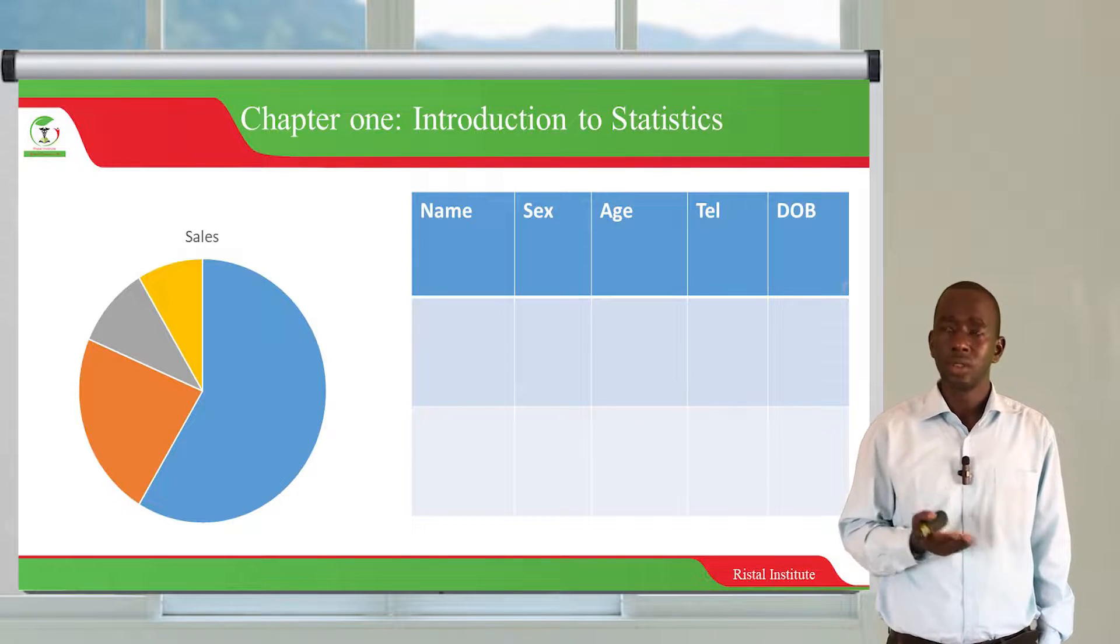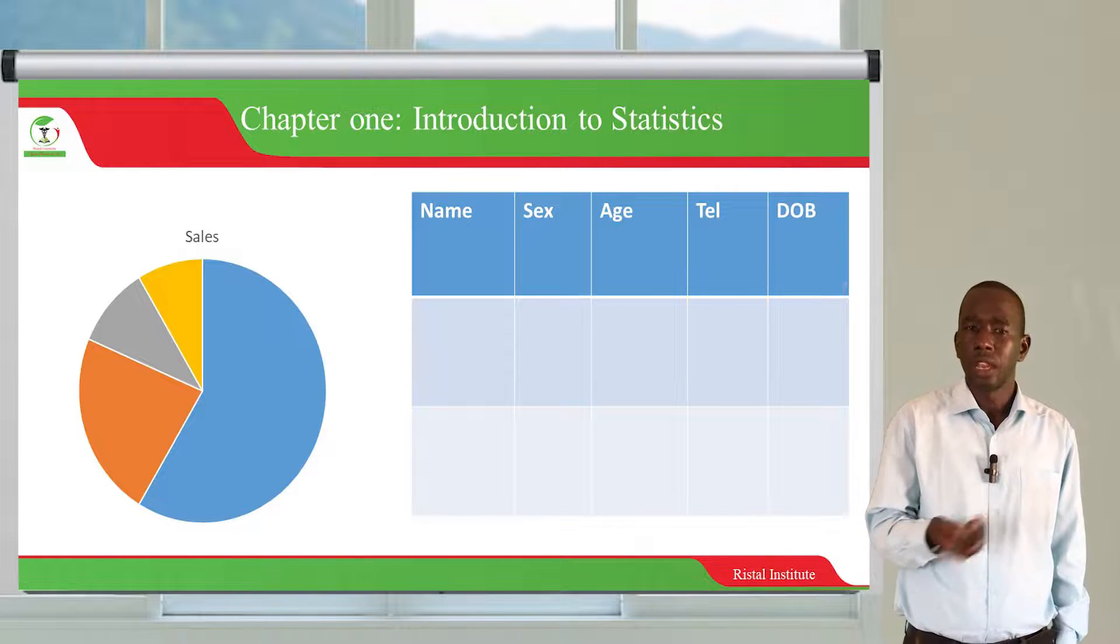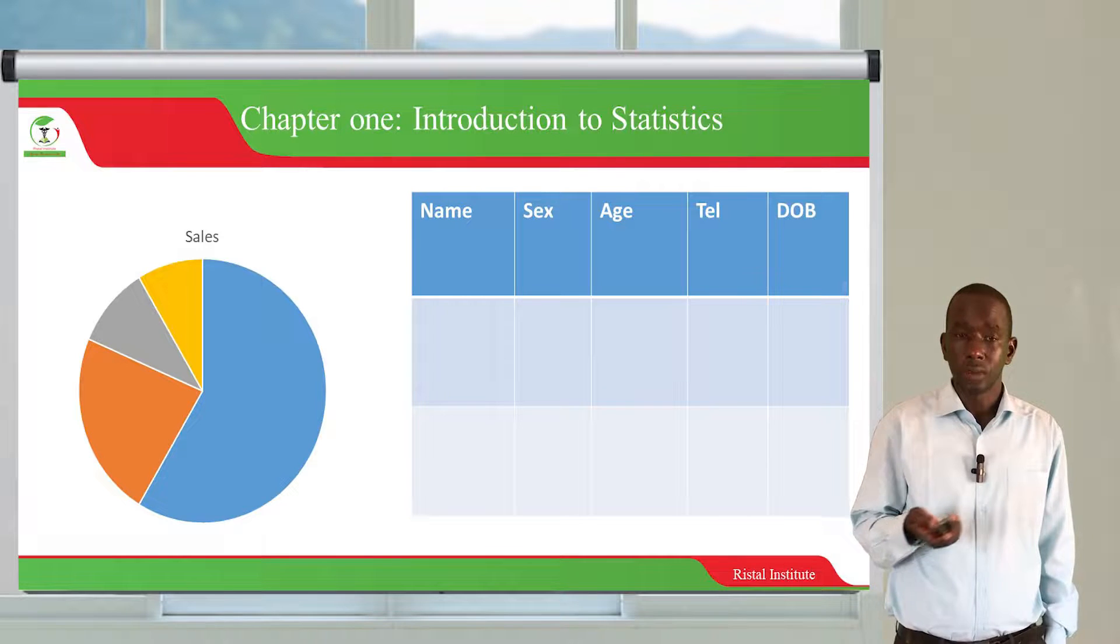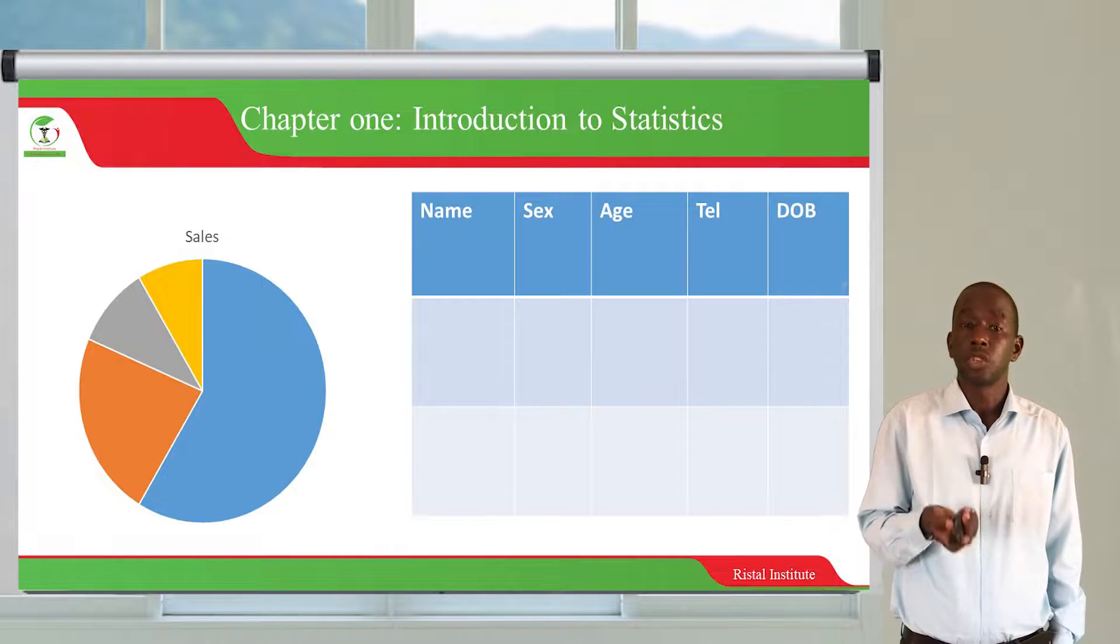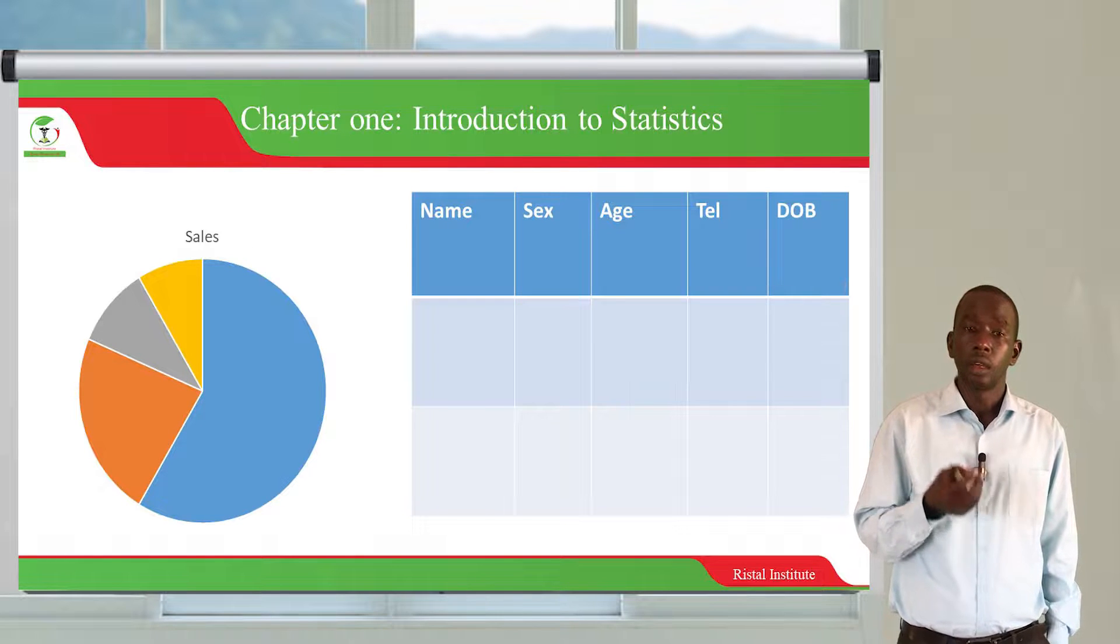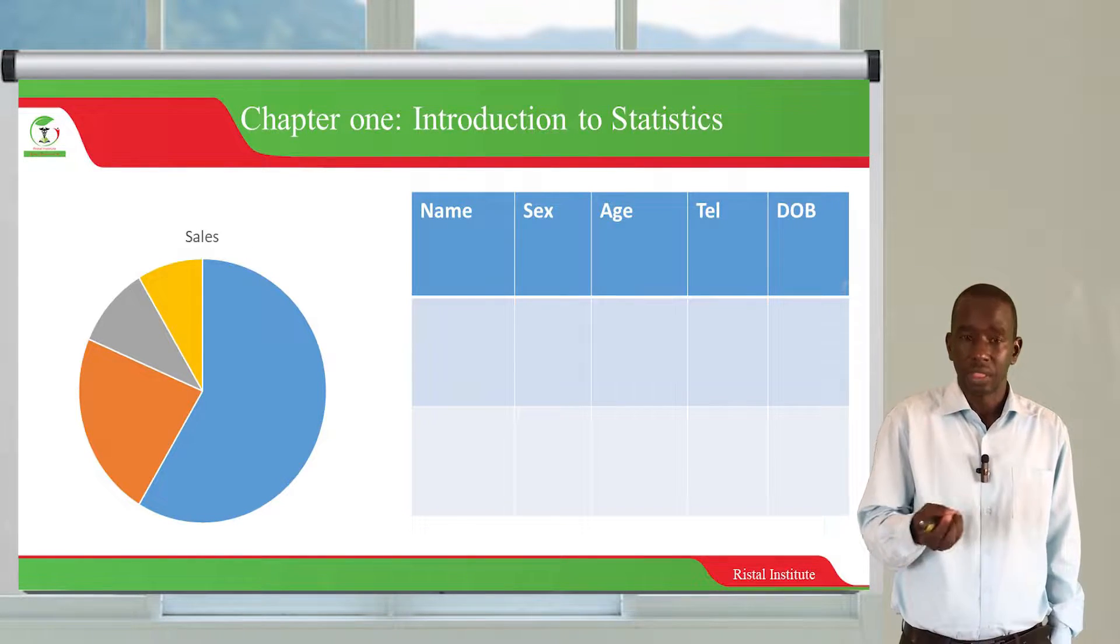While using tables, you can group in terms of names, sex, gender, age, telephones, and date of birth.